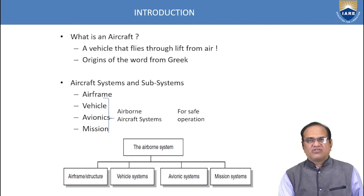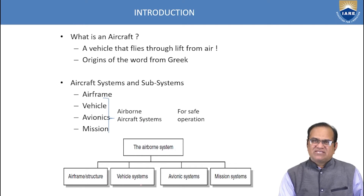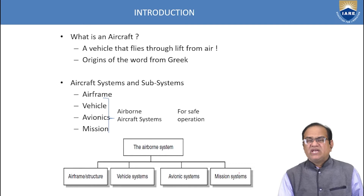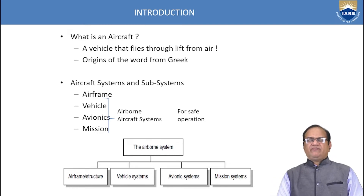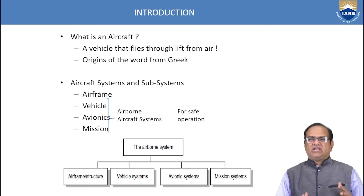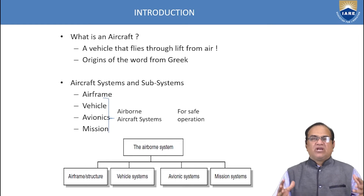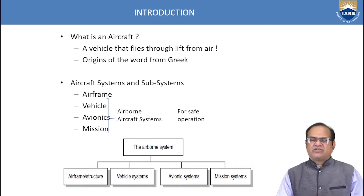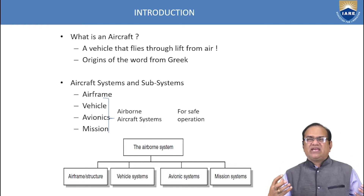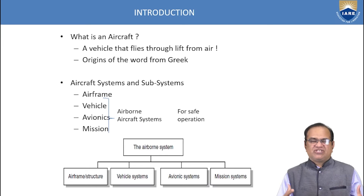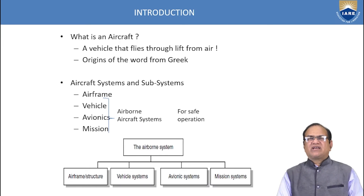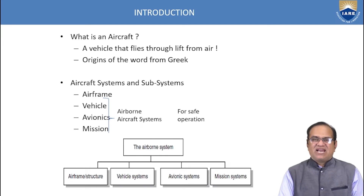The airframe system includes the aircraft body — the fuselage, wing, tail, vertical stabilizer, horizontal stabilizer, landing gears, and all other body parts. Inside are structural elements like longerons, stringers, and skin. All these parts come under airframe and structural systems.